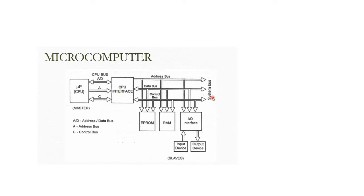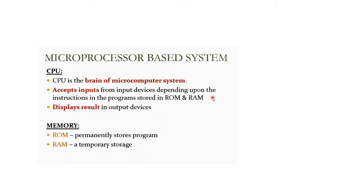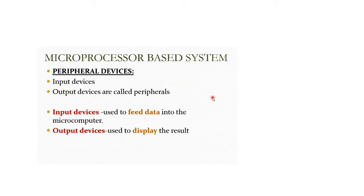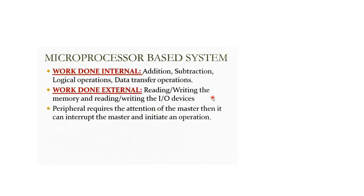The system bus consists of three buses: address, data, and control. The system contains memory (RAM and ROM), the CPU, and peripheral devices. Internally, the microprocessor can perform addition, subtraction, and logical functions. External devices like sensors send data to the microprocessor from outside.